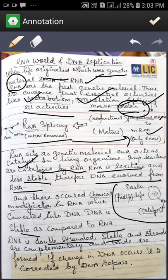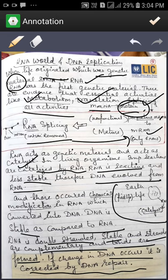DNA is stable and the strands are complementary to each other and the bonds are found between the two strands. The main bonds are the hydrogen bonds. If change in DNA occurs, it is corrected by the DNA repair system.